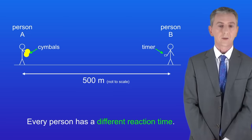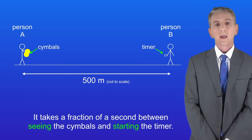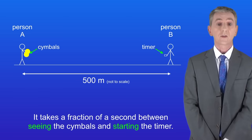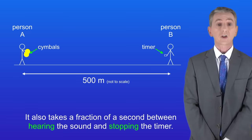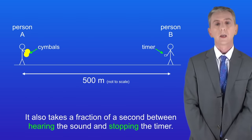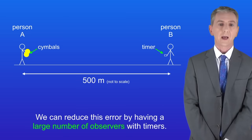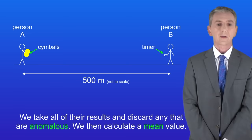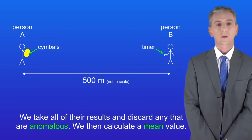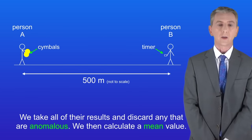Firstly, every person has a different reaction time. It takes a fraction of a second between seeing the symbols and starting the timer. It also takes a fraction of a second between hearing the sound and stopping the timer. Now, we can reduce this error by having a large number of observers with timers. We take all of the results and discard any that are anomalous. We then calculate a mean value.